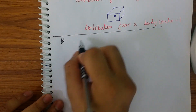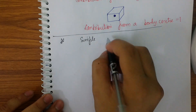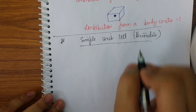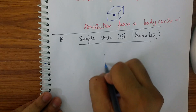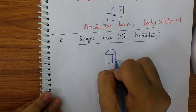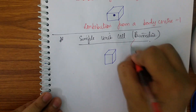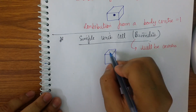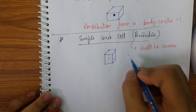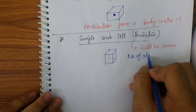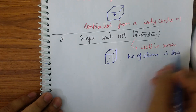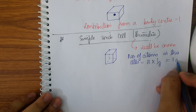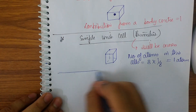Now let us get to the cubic systems. The first cubic system is the simple cubic cell, also known as primitive. All the atoms in this cell will be at the corners. In a cube, how many corners do I have? I will be getting 8 corners. So the number of atoms = 8 corners × (1/8 contribution per corner) = 1 atom. So the number of atoms in the simple cubic cell is one.